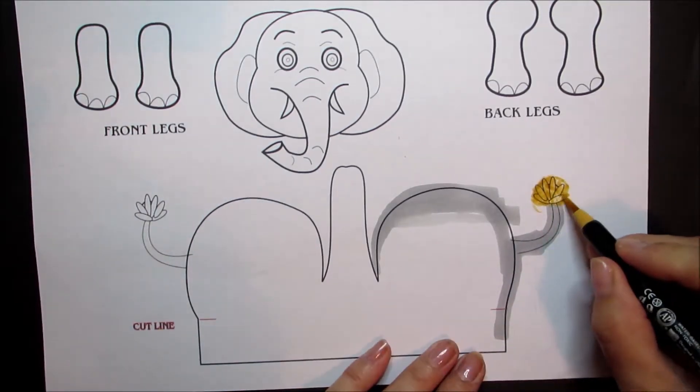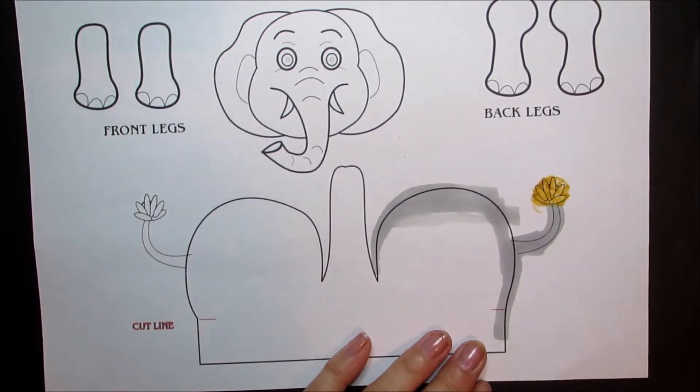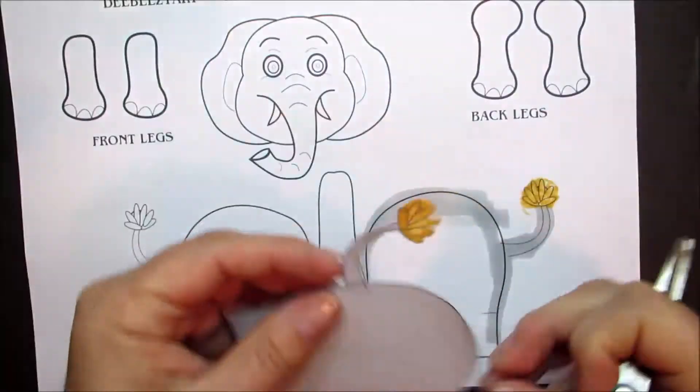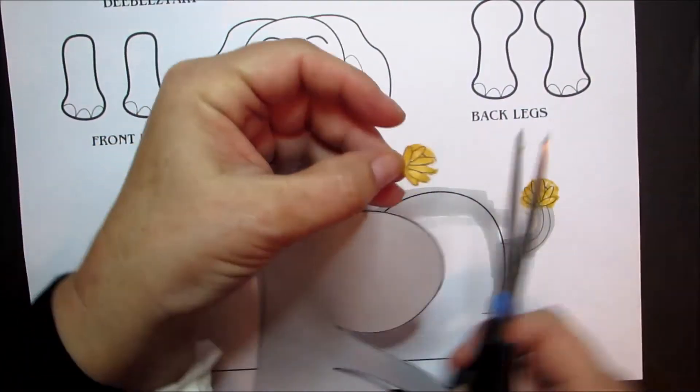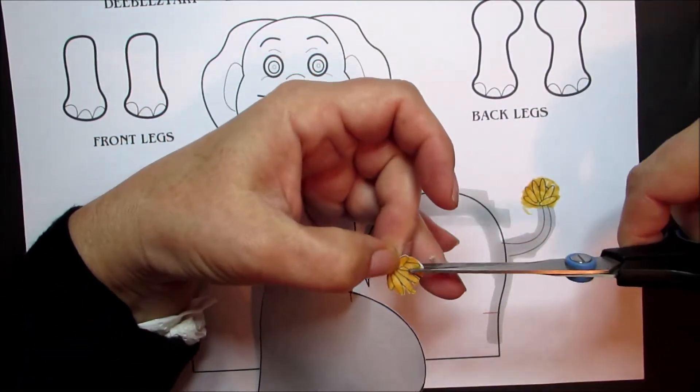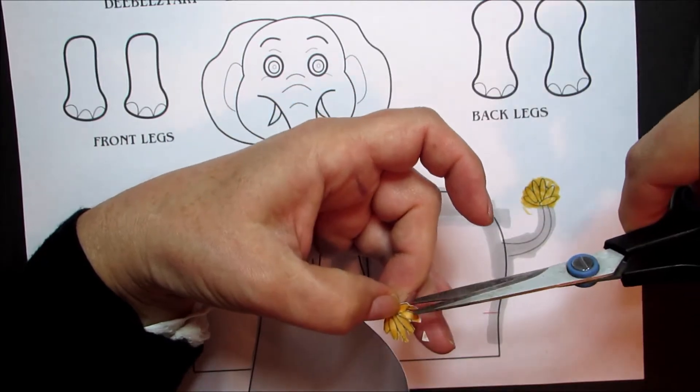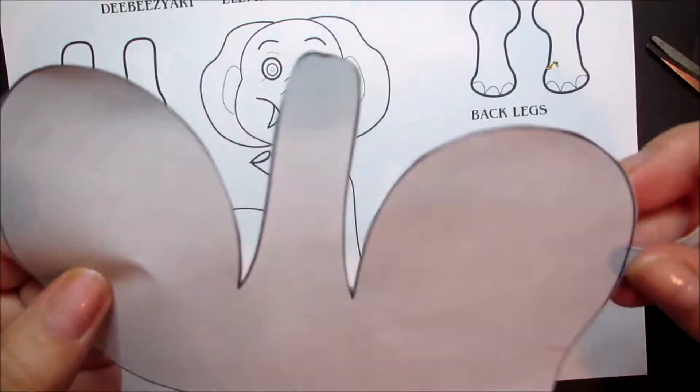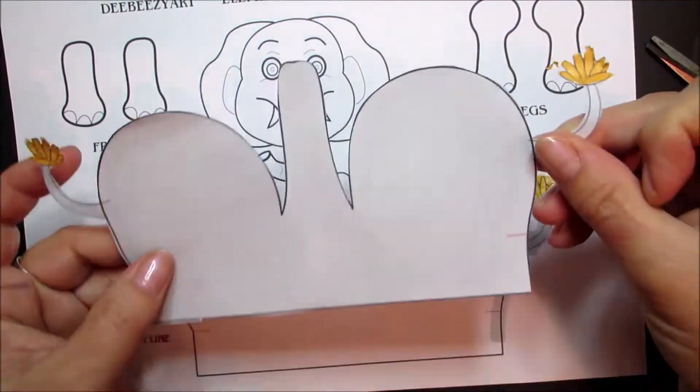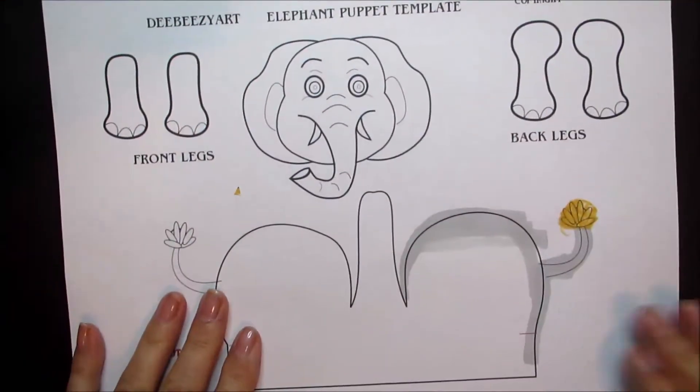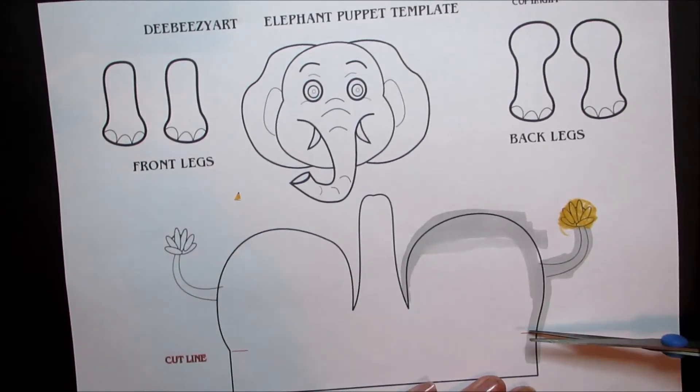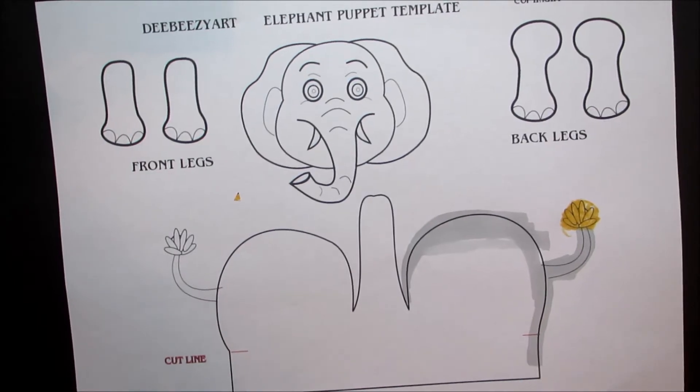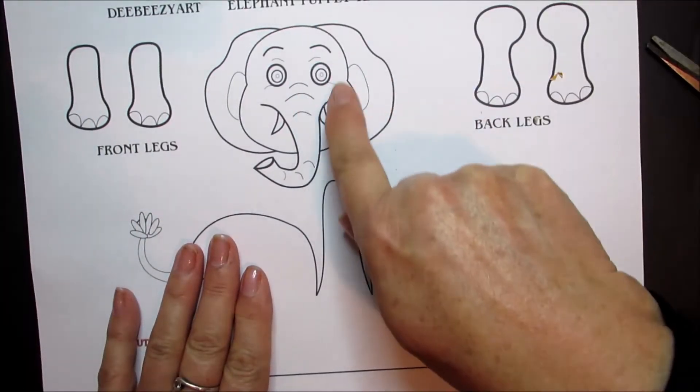When you do the end of the tail, color in like this. The reason we've done this is when we cut that out, you're not going to cut around all the little shapes, you're just going to cut around it first and then do little cut marks into the tail like this so that we can get this sort of spiky effect. And again don't forget to cut these little lines here.